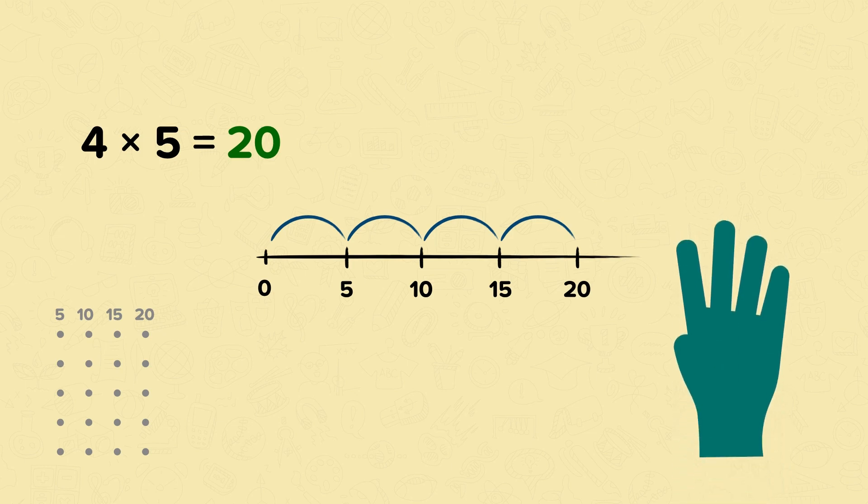You may find that you don't need to write anything down to help you with your multiplication. You may be able to count on your fingers. To solve 4 times 5, you could just hold up 4 fingers and count 5 on each finger. 5, 10, 15, 20.